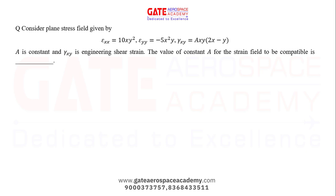Consider a plane stress field given by: epsilon_xx = 10xy², epsilon_yy = −5x²y, and gamma_xy = Axy(2x − y), where A is a constant and gamma_xy is the engineering shear strain. The value of constant A for the strain field to be compatible is to be determined.